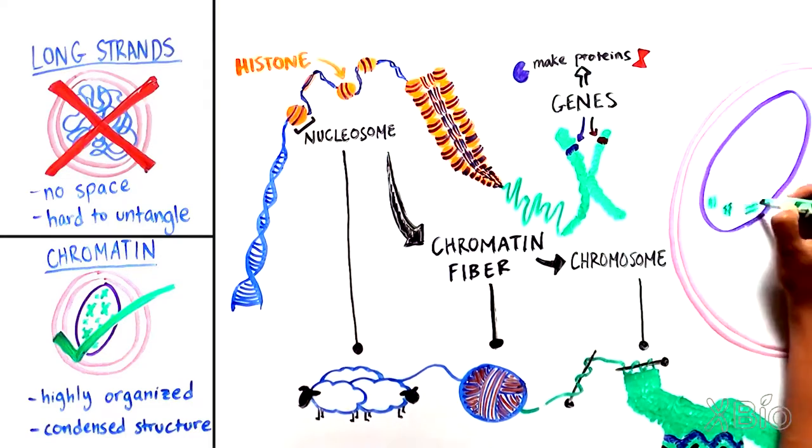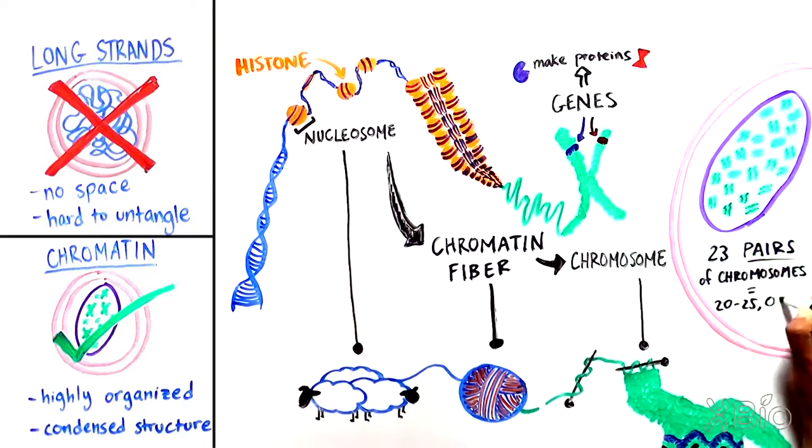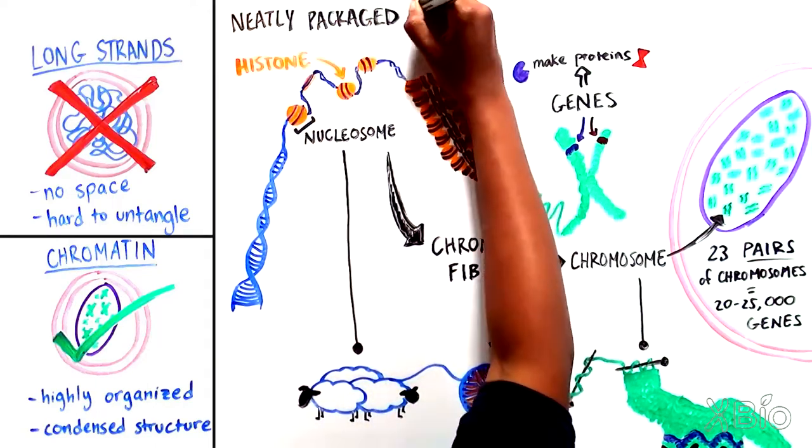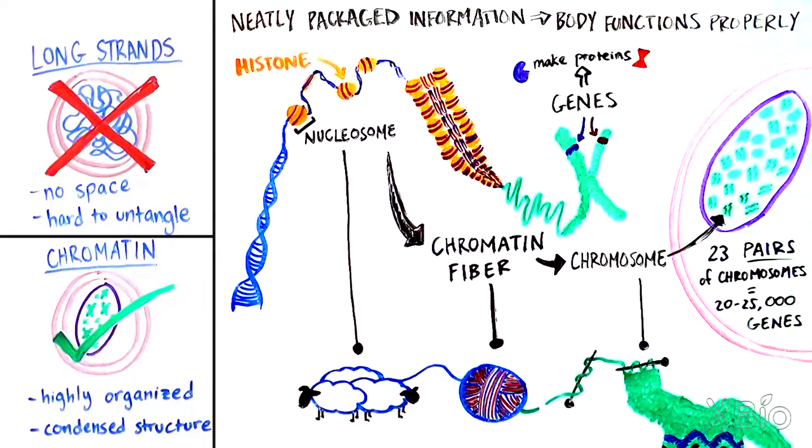Each human cell has 23 pairs of chromosomes, or 46 total, which contain approximately 20,000 to 25,000 genes, all of which live inside the cell's nucleus. From here, all that neatly packaged information is responsible for making sure each cell, and in turn our whole body, functions properly.